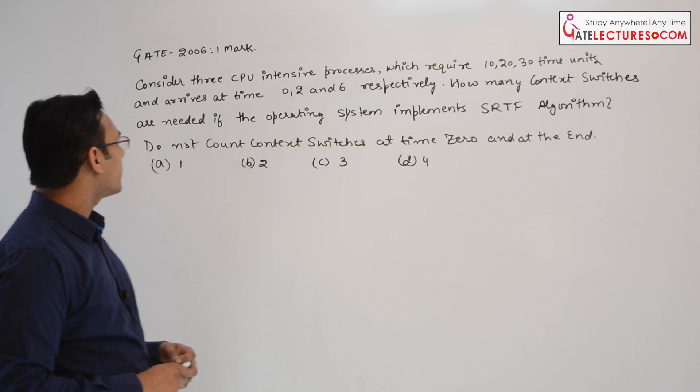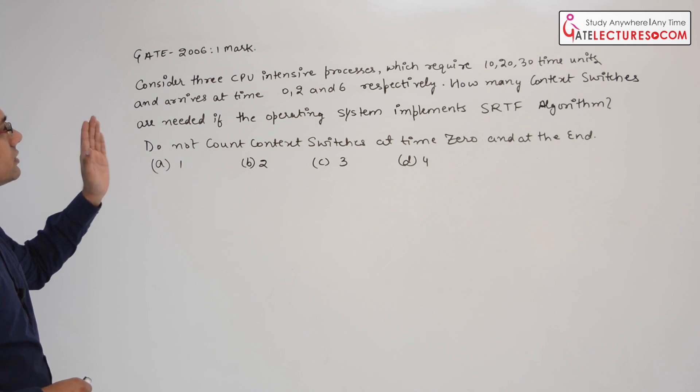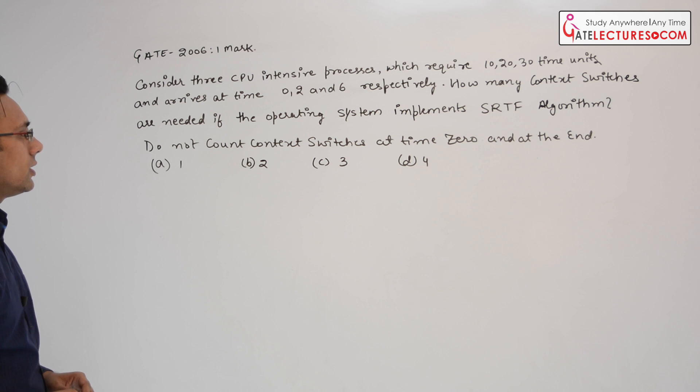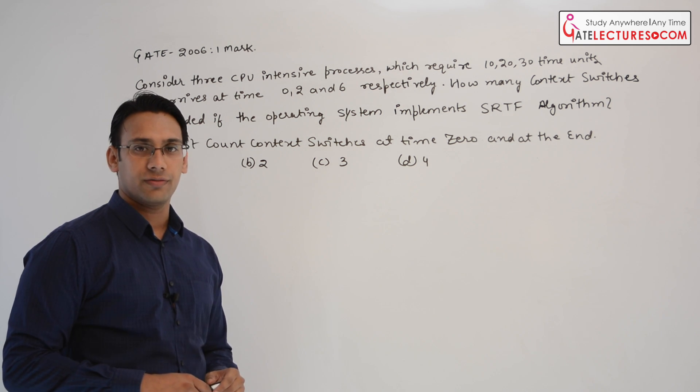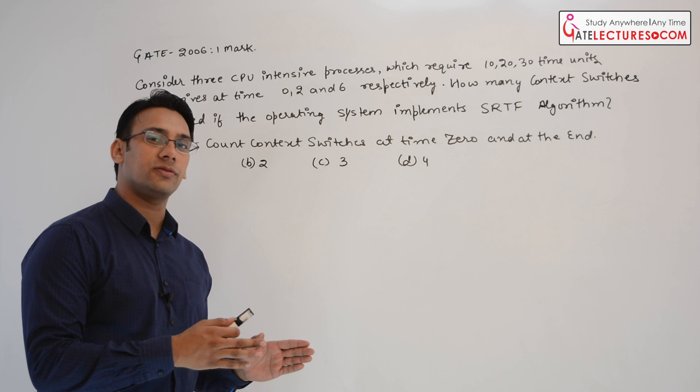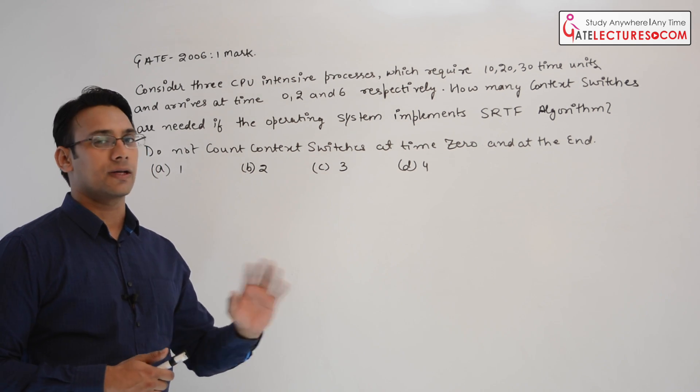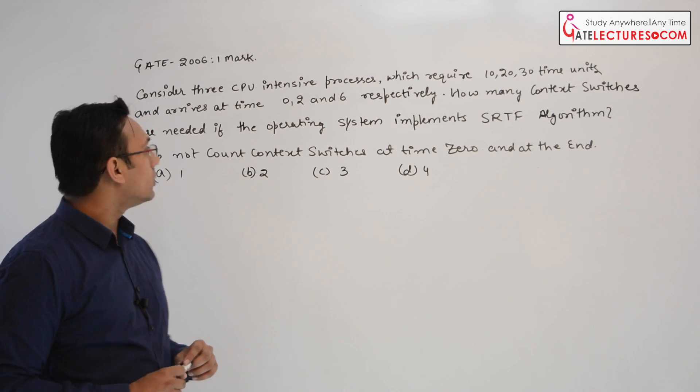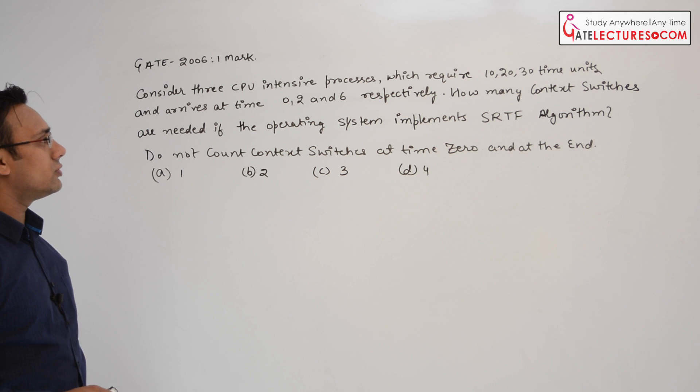Consider this question. It was asked in GATE 2006. What they are asking is, consider three CPU intensive processes which require 10, 20, 30 time units. Why are they saying CPU intensive processes? Because these processes are going to take more CPU time as compared to more input-output time. Now, the arrival at time 0, 2 and 6.